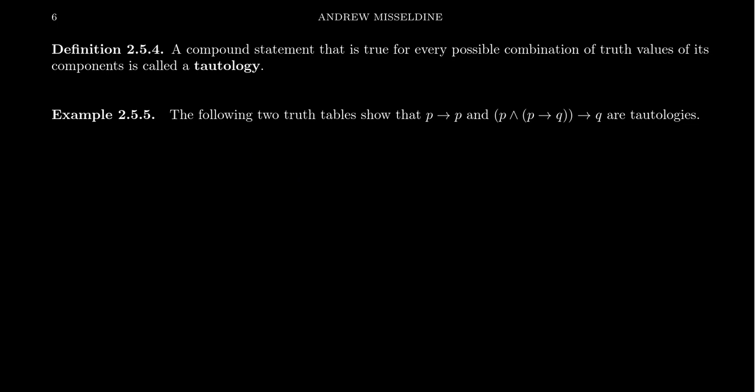In logic, we have something similar to an algebraic identity, and this is what's referred to as a tautology. It's a statement for which every possible assignment of truth values to the primitives will always make the statement true. It doesn't matter what you plug into it—it's always true.